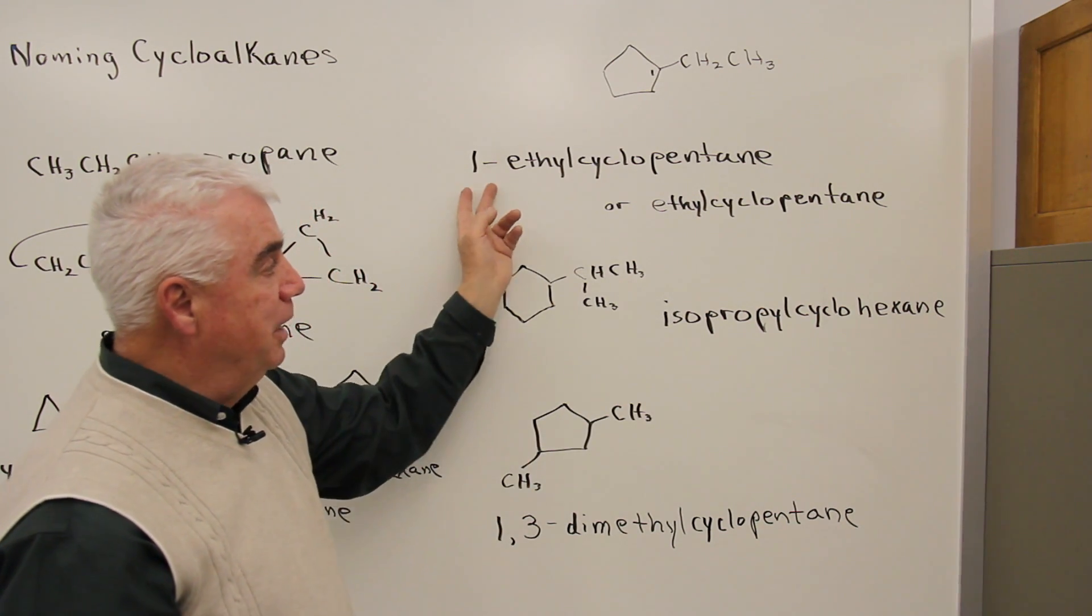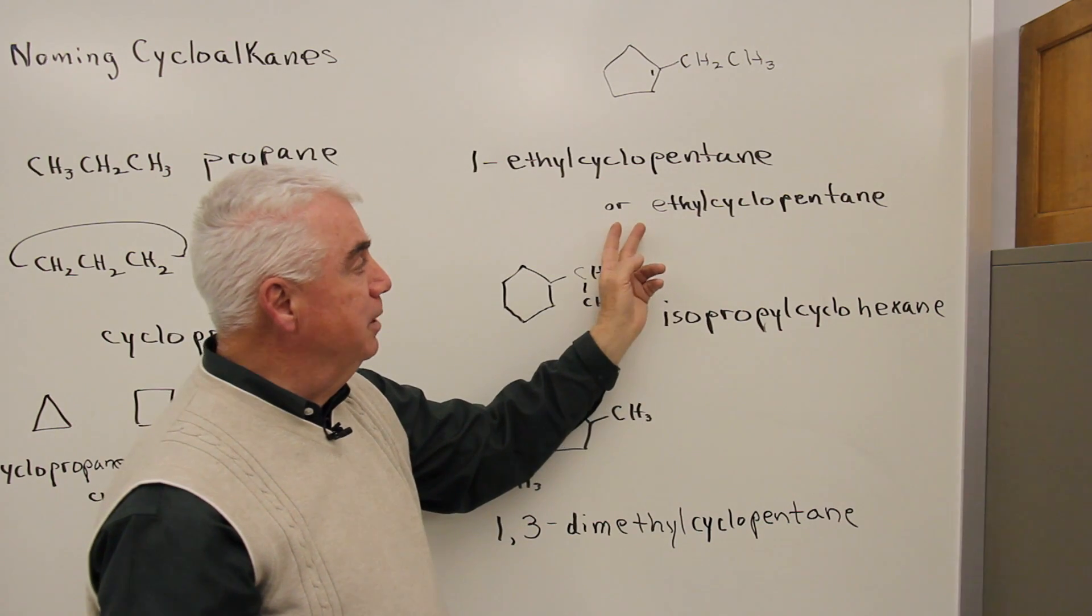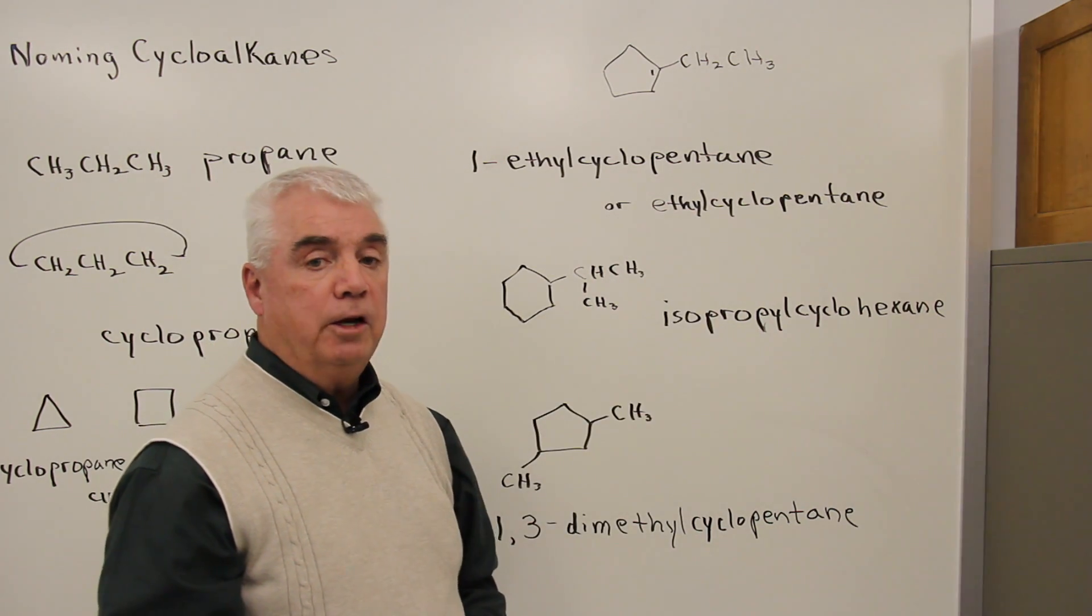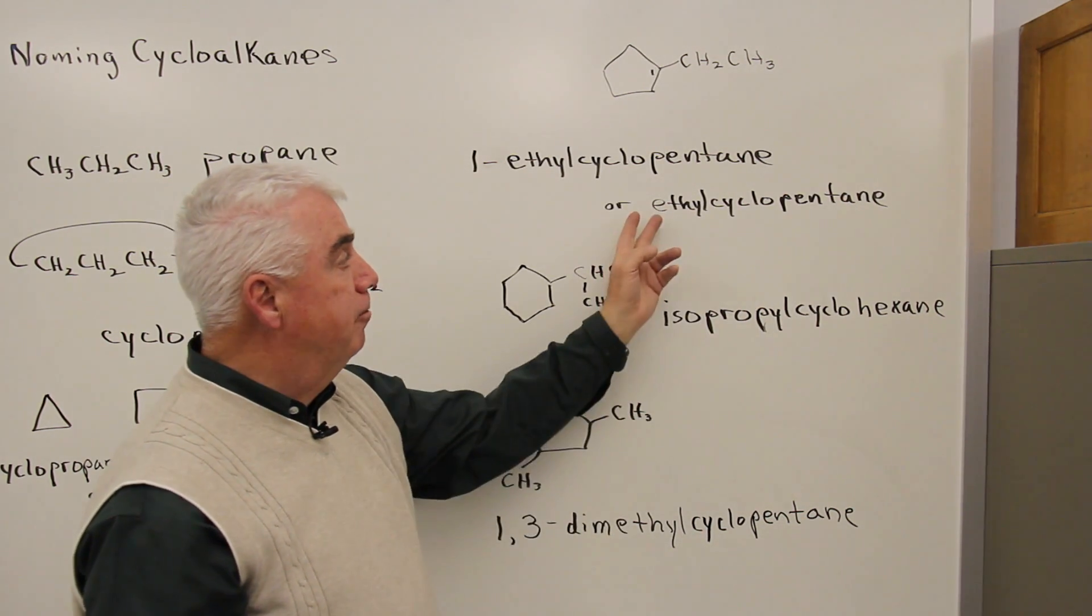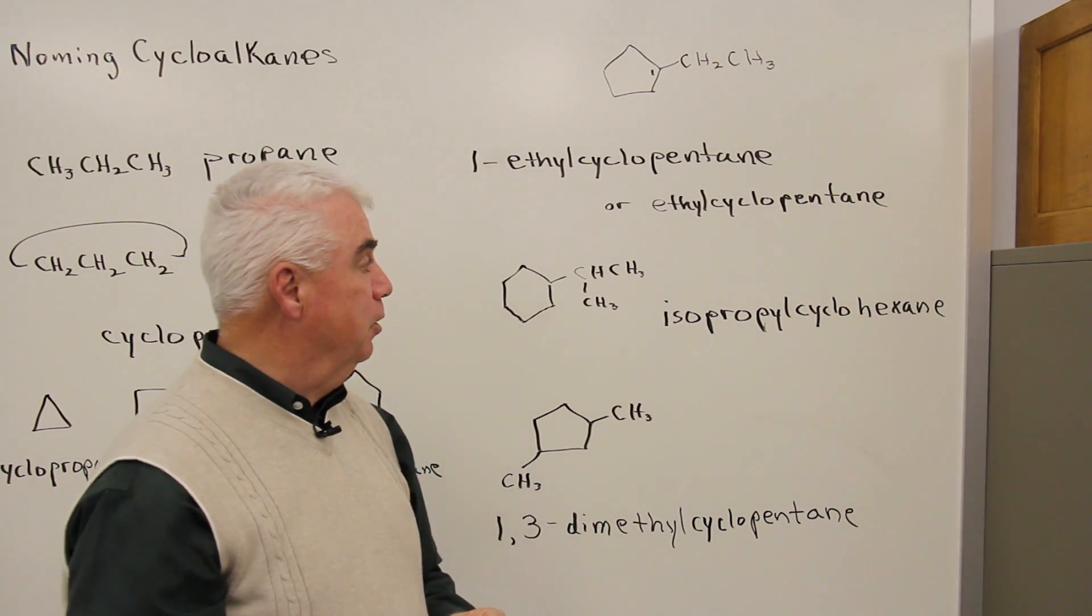And sometimes, because of that, they abbreviate one more step and just call this ethyl cyclopentane, knowing full well that the ethyl group is at position one.